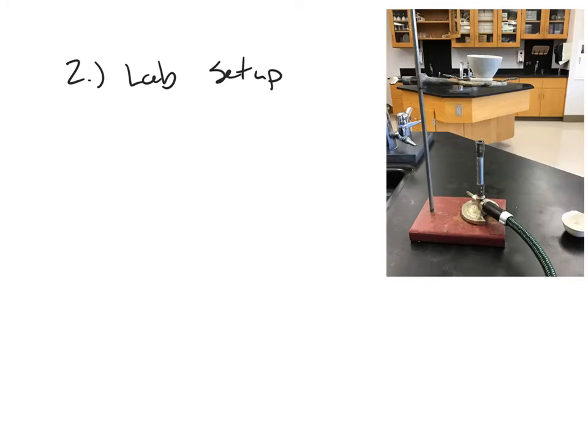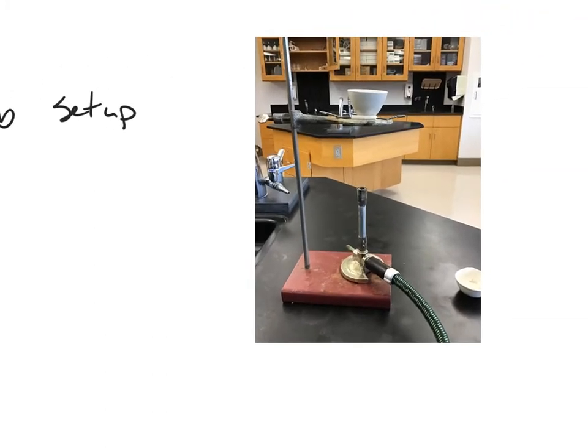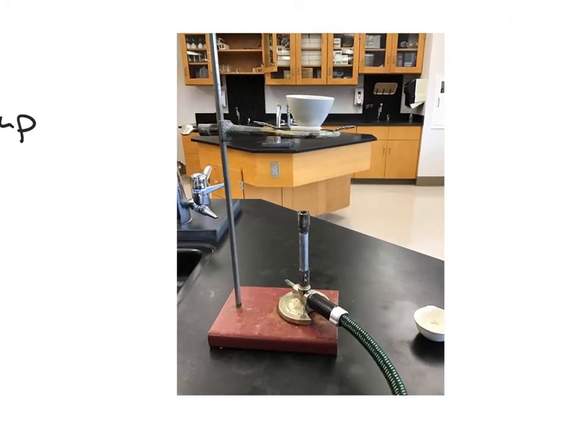Next I'm going to talk about the lab setup a little bit. Let's zoom in on this picture. There are a couple things I want to point out. First of all you got your Bunsen burner here and it's going to be connected to gas and it's going to be on and it's going to be shooting out a flame. The flame is going to be coming out blue.